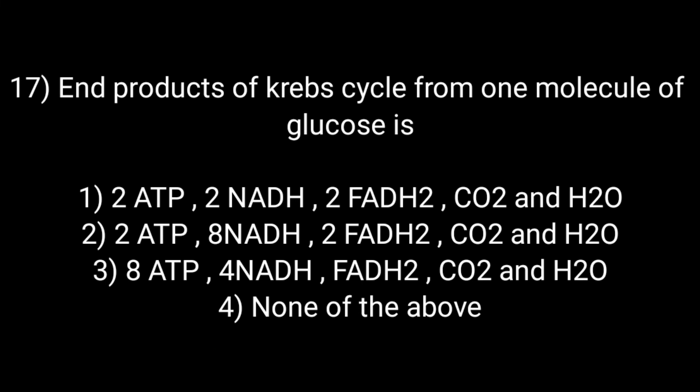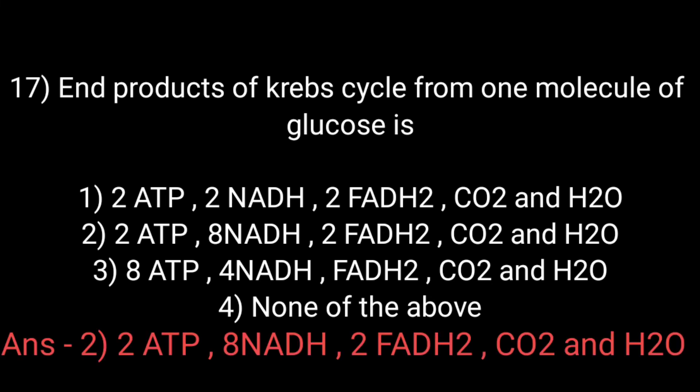End products of the Krebs cycle from one molecule of glucose: Option number first: 2 ATP, 2 NADH, 2 FADH2, CO2 and H2O. Option number second: 2 ATP, 2 FADH2, CO2 and H2O. Option number third: 8 ATP, 4 NADH, FADH2, CO2 and H2O. And option number fourth: none of the above. The correct answer is option number second: 2 ATP, 8 NADH, 2 FADH2, CO2 and H2O.